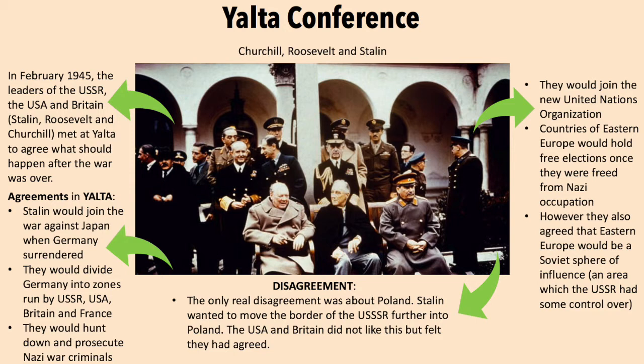Agreements at Yalta included that Stalin would join the war against Japan when Germany surrendered. They would divide Germany into zones run by the USSR, the USA, Britain and France. They would hunt down and prosecute Nazi war criminals. They would also join the United Nations Organisation, and countries of Eastern Europe would hold free elections once the Nazis were gone.